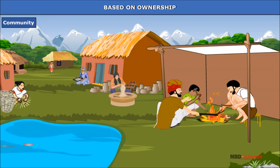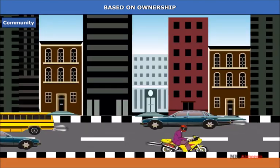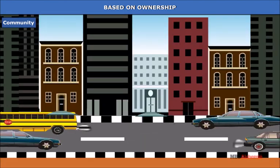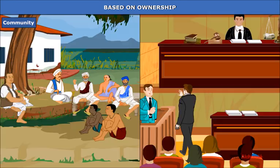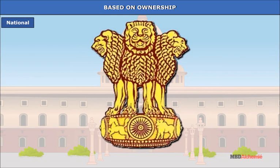Some examples of community-owned resources are public lands, parks, playgrounds and Panchayat Gharas in urban and rural areas. National resources are owned by the government. In the past, all land, water and other natural resources were considered to be owned by the sovereign — king, emperor or the ruler.